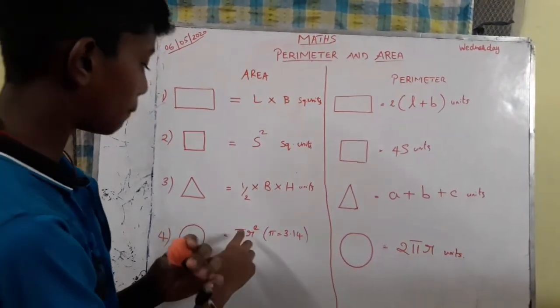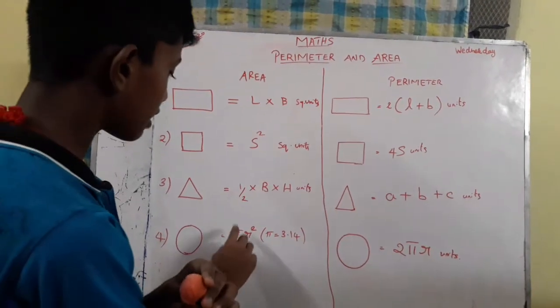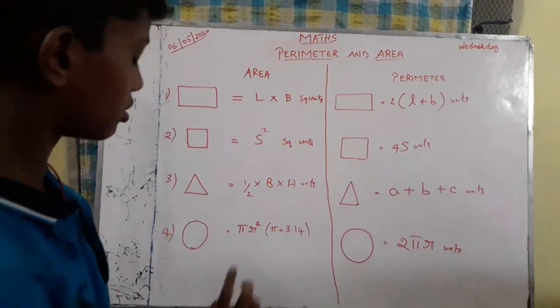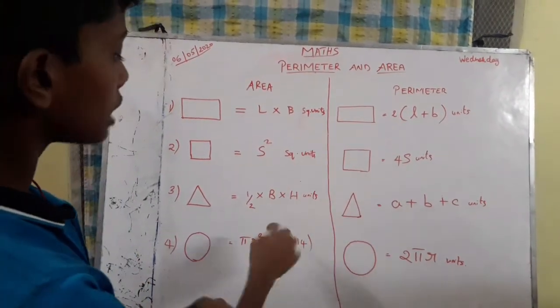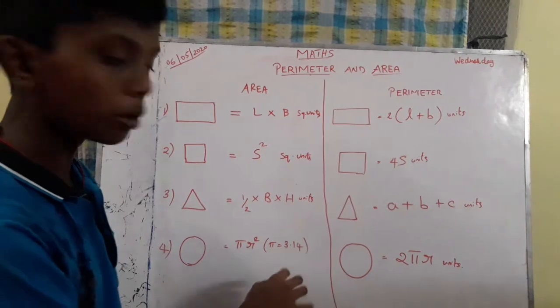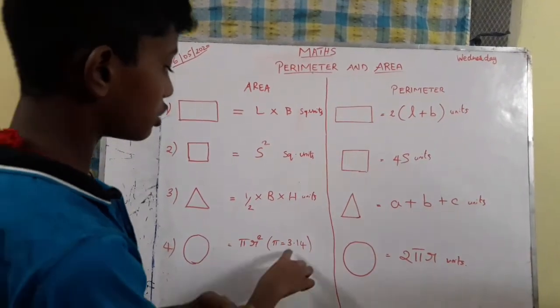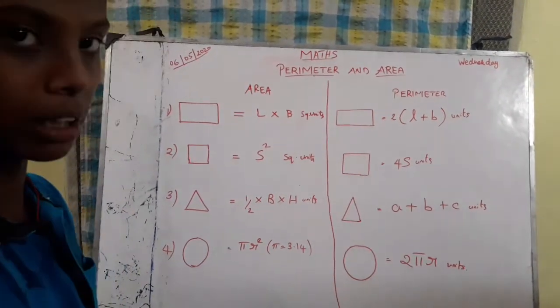Circle is pi r square. Pi is 3.14. This is pi r square. Pi is 22 by 7, you can divide it as 3.14. This is the estimated value.